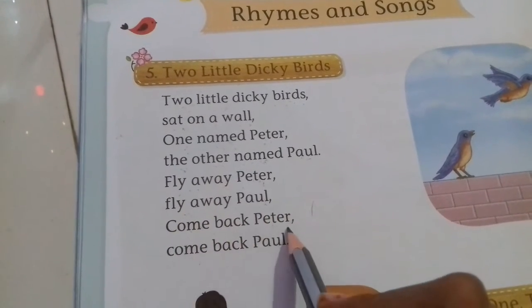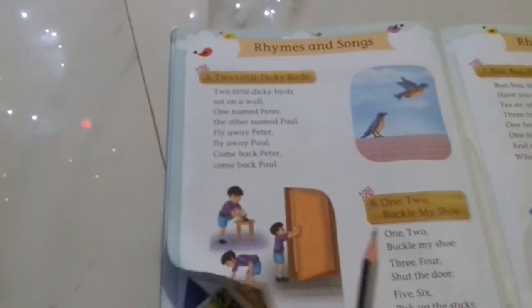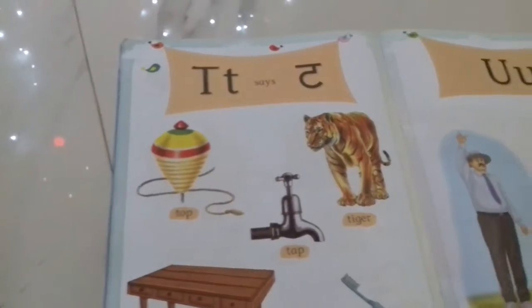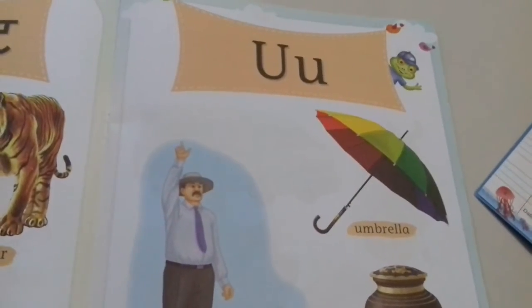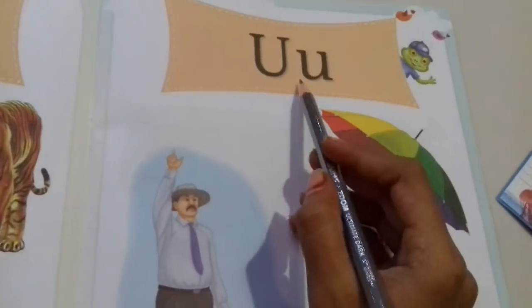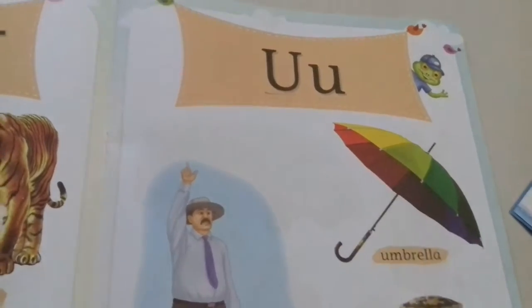So now, as you all know, in nursery you have learnt capital letters. Now in LKG you will learn small letters. This small letter you will learn — you have learnt this letter.